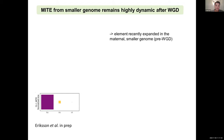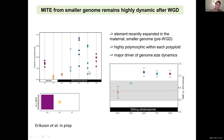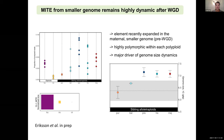Looking closer into this element, we observe the diploid maternal parent with the smaller genome has actually more of this element than the paternal parent with the larger genome. Using an outgroup, we can assume this element recently expanded in the maternal smaller genome, and this happened prior to the whole genome duplication events. We also observe that this element is highly polymorphic within each polyploid lineage, suggesting it has ongoing dynamics, and appears to be a major driver of genome size increase after allopolyploidization in this group.